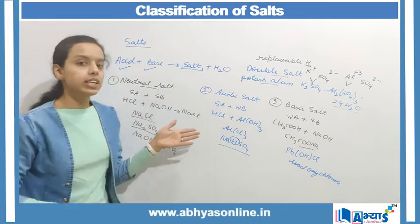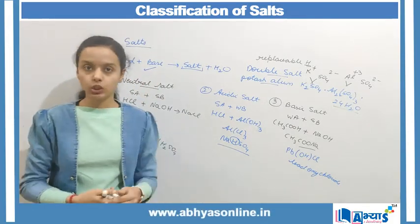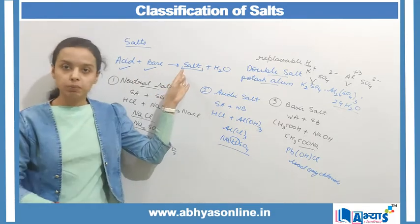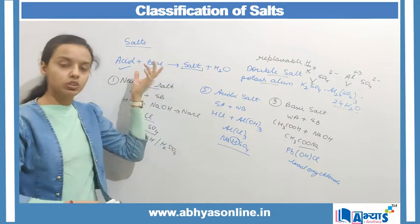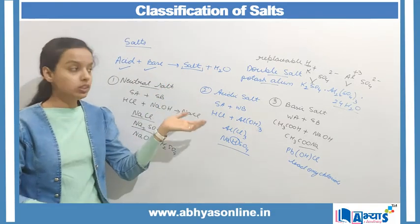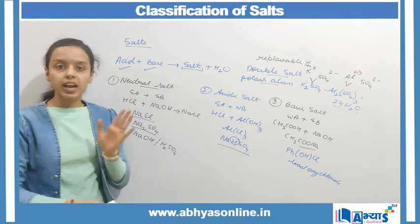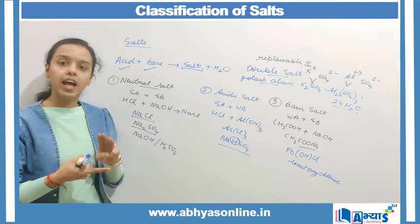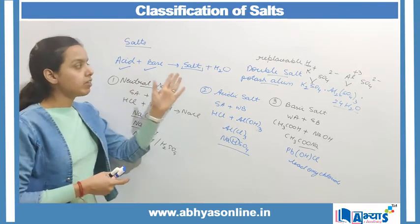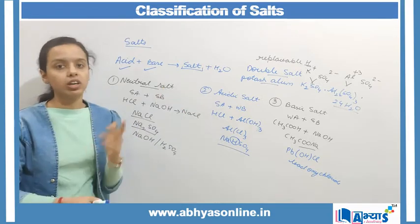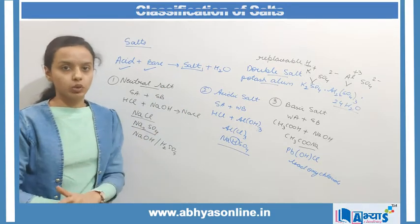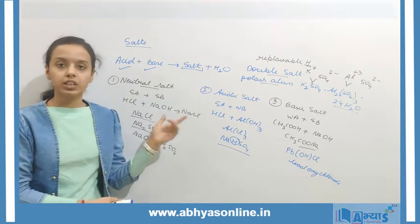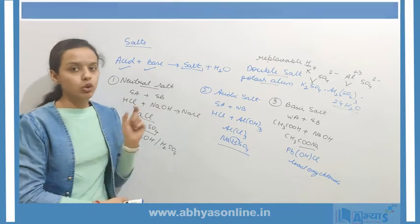So, till now we have discussed the classifications of salt. Earlier we discussed how salt is prepared from the neutralization reaction. Then we discussed three important categories: neutral, acidic, and basic salt. And in the end we discussed what double salts are. This was everything about the concept on classification of salts.